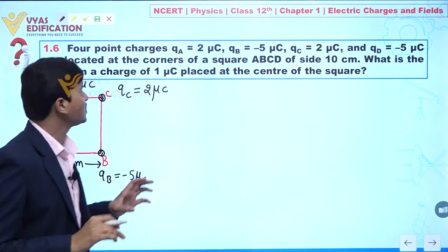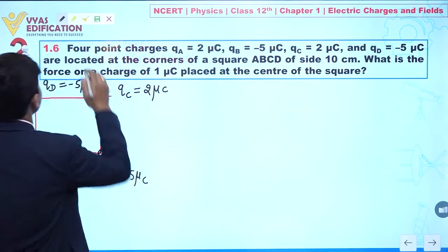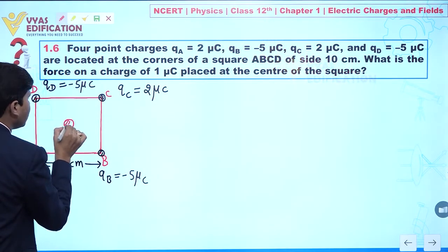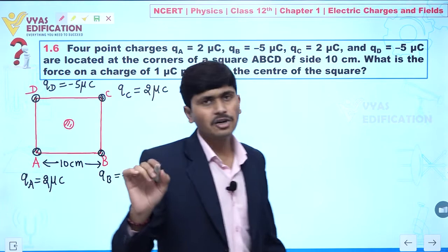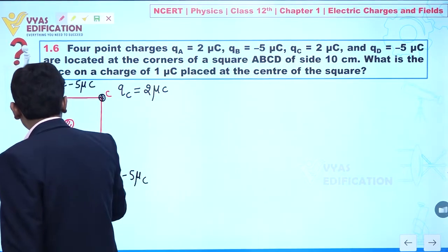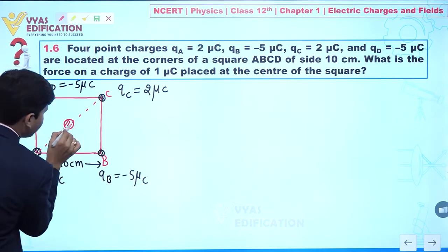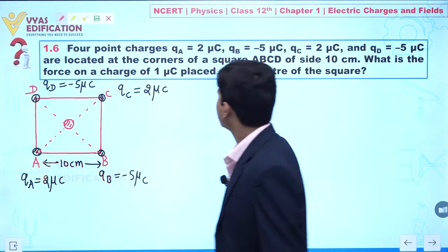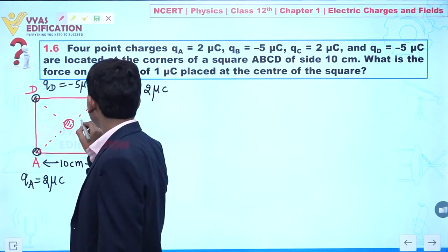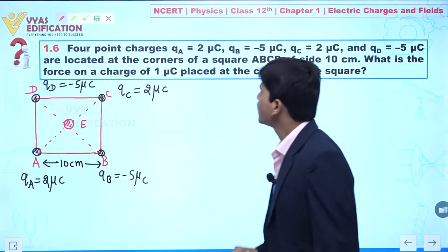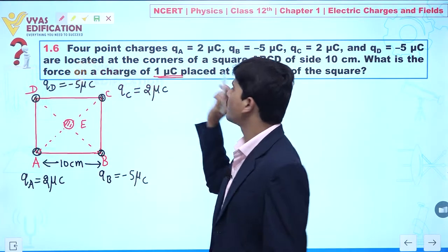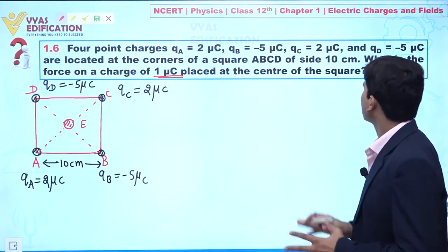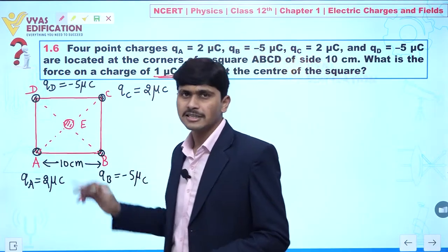What is the force acting on a charge of one microcoulomb placed at the center of the square? Let's suppose I am placing here a charge E at the center of this square. This charge E is one microcoulomb. Our objective in this question is to calculate the net force acting on this charge.